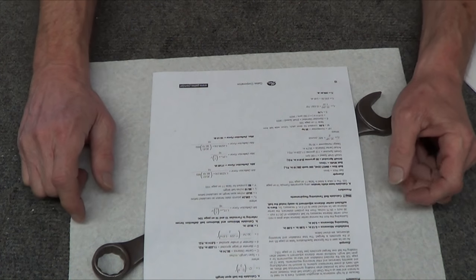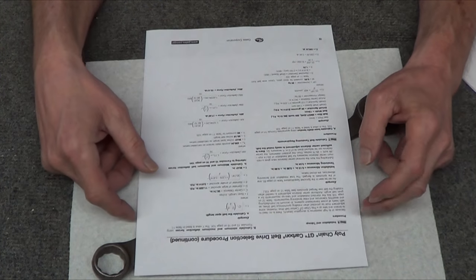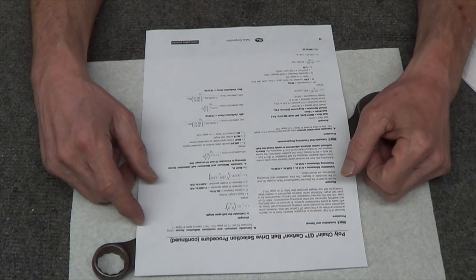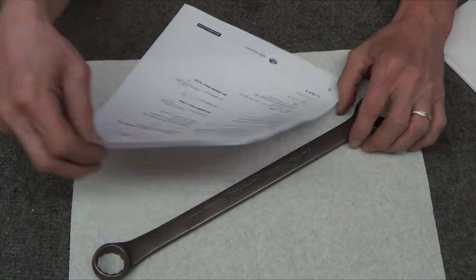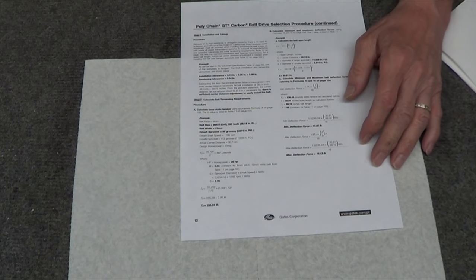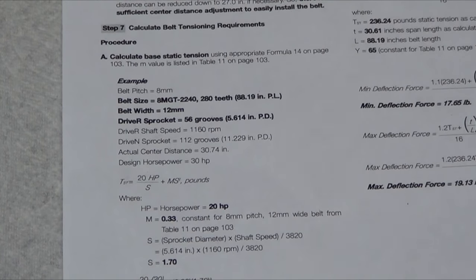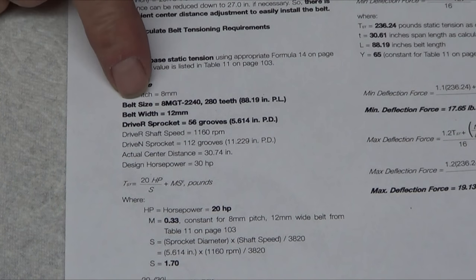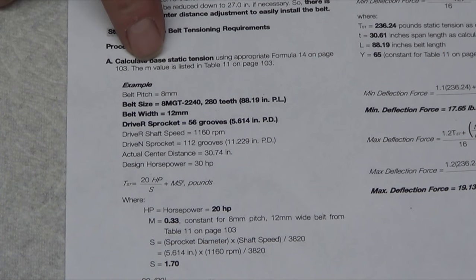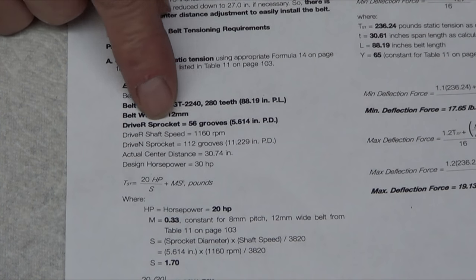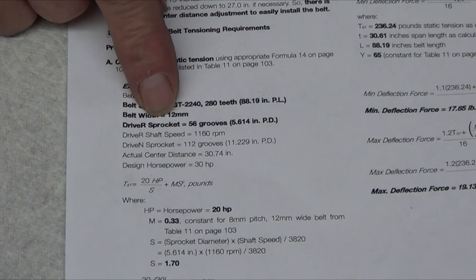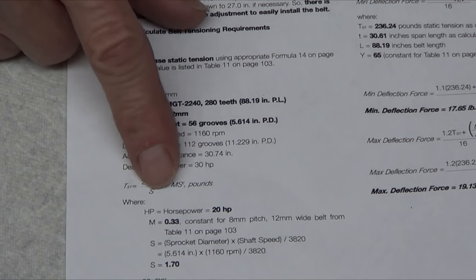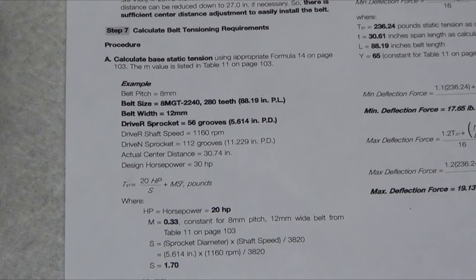So I went to Gates and found the equivalent to what we're using. It's a poly chain carbon belt synchronous. Downloaded their application note PDF. I can zoom in on this. Hopefully you guys can read it. Here's the note on tensioning. And the bottom line is when you go through it, they're taking everything into account - the belt pitch, belt width, belt size, sprocket. That's like I keep calling it a gear or pulley or whatever. It's a sprocket.